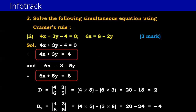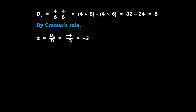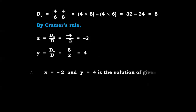Now we write Dy with a1=4, c1=4, a2=6, c2=8. So Dy = 4×8 − 6×4 = 32 − 24 = 8. By Cramer's Rule, x = Dx/D = −4/2 = −2, and y = Dy/D = 8/2 = 4. Therefore x = −2 and y = 4 is the solution of the given simultaneous equation.